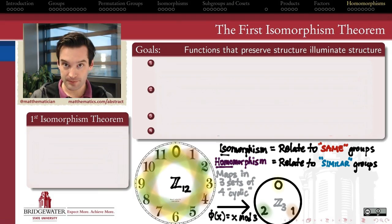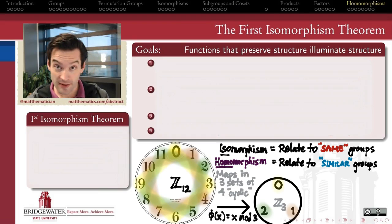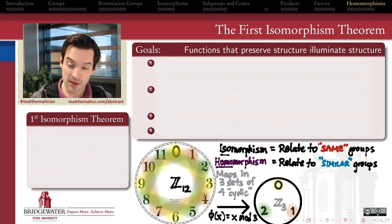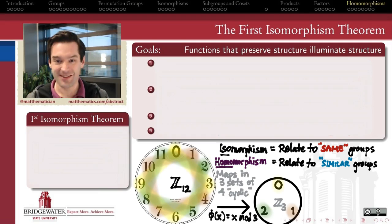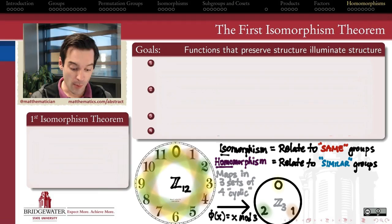So this function, because it does such a good job of respecting the operation, preserving the structure of Z mod 12, mapping identity to identity, and mapping all the elements in this nice, predictable way from Z12 to Z3, rather than calling it an isomorphism where 'iso' comes from the Greek word for 'same', we call it a homomorphism. 'Homo' coming from another Greek prefix that also means same, but not quite as same. Think of this as similar. Morph means shape, homo means similar. Similar shape.